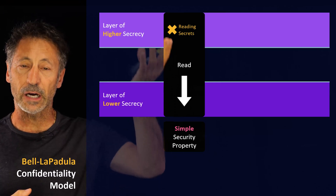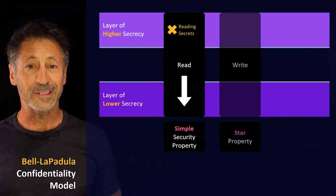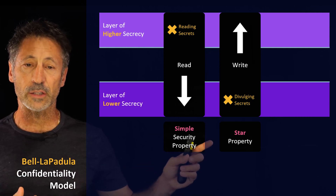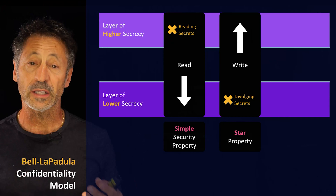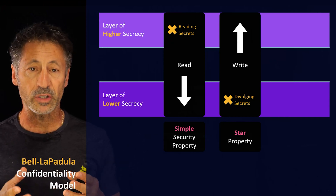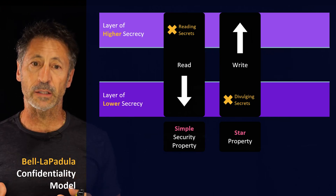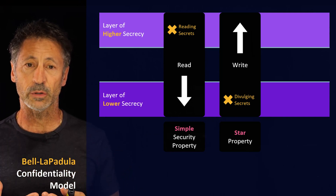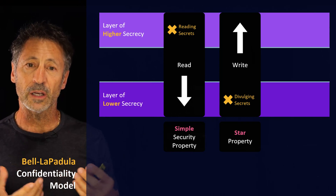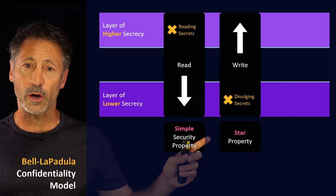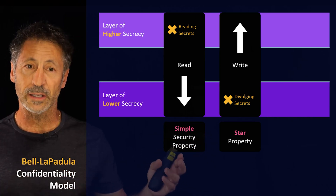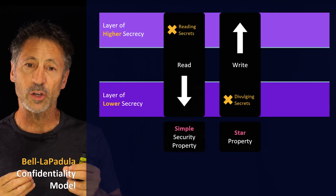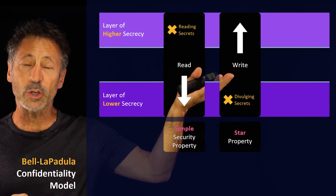We cannot allow reading up, which makes sense from a confidentiality perspective. The second rule of Bell-LaPadula addresses the ability to write, and it is referred to as the star property. The star property means the ability to write. Remember, this model only addresses confidentiality. So when we implement this model — in a database environment, for example — if you give people the ability to write, we must enforce the star property. If we are in the medium layer and have write capabilities, you can write at your layer but also write up.